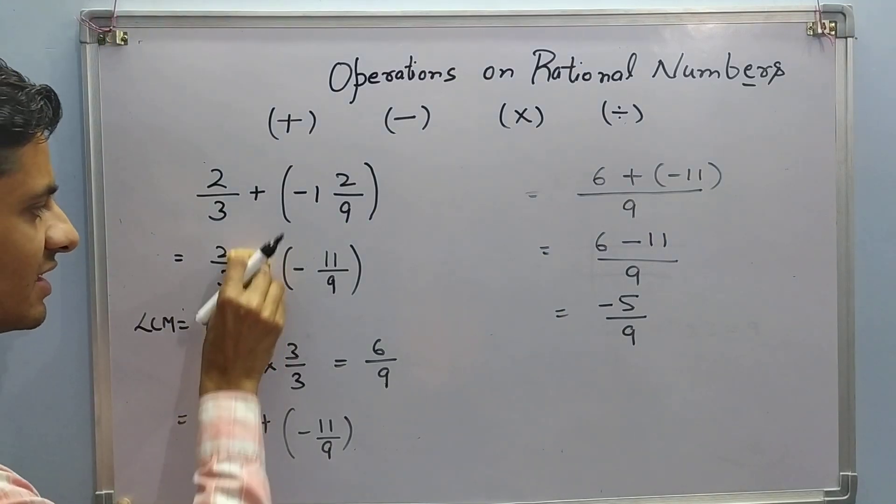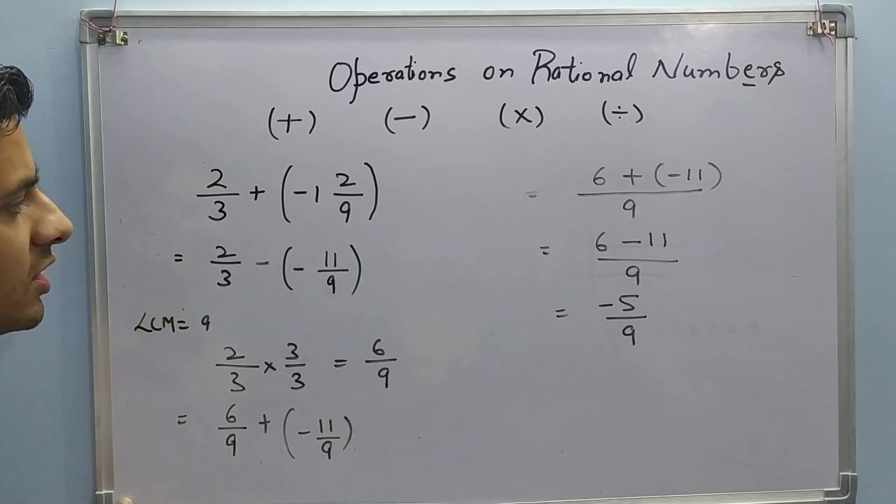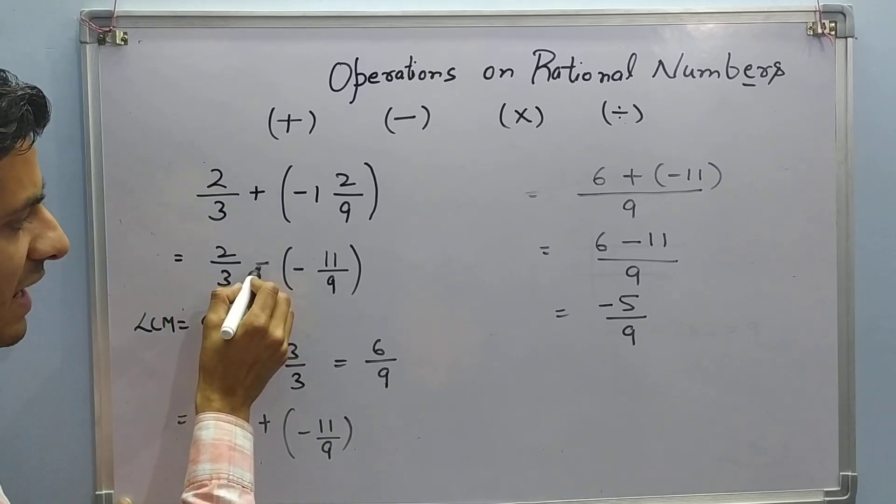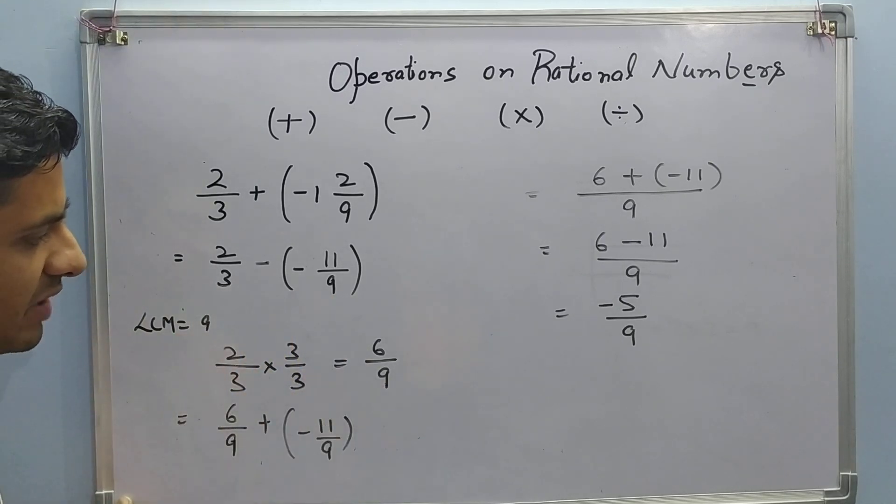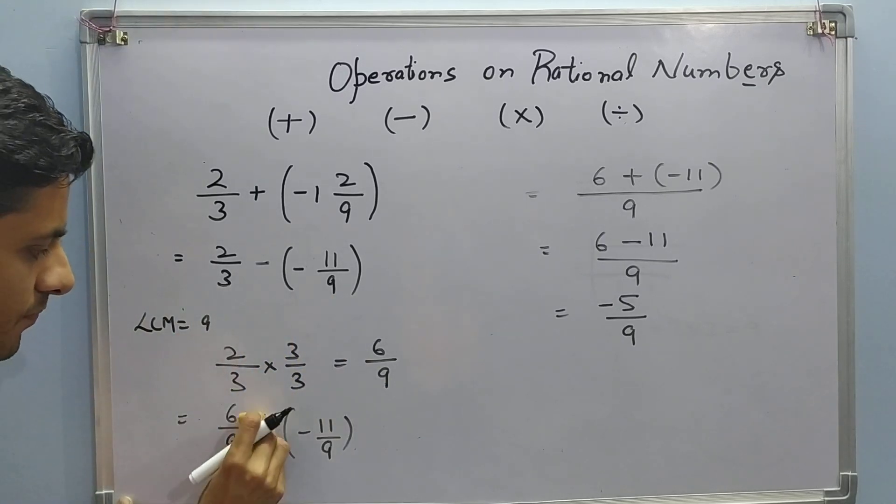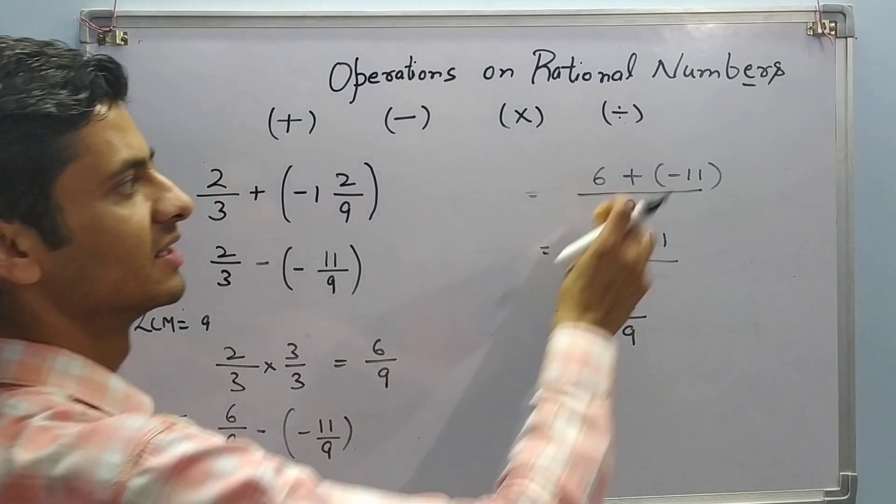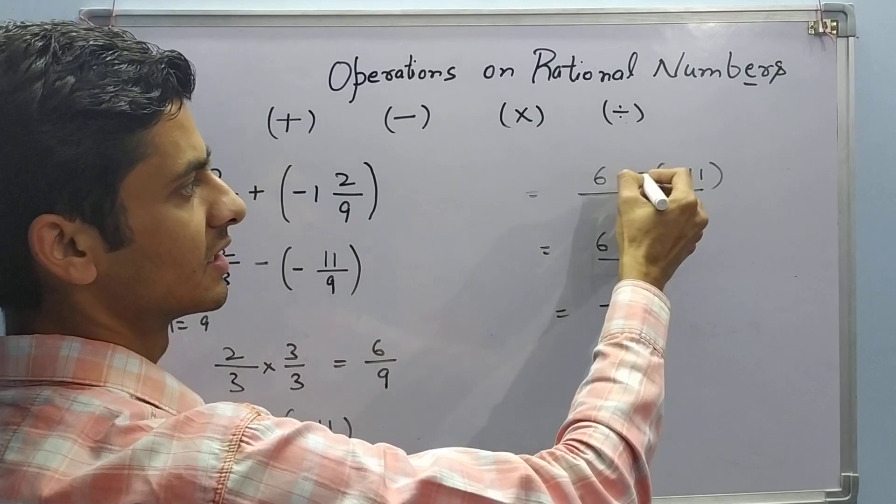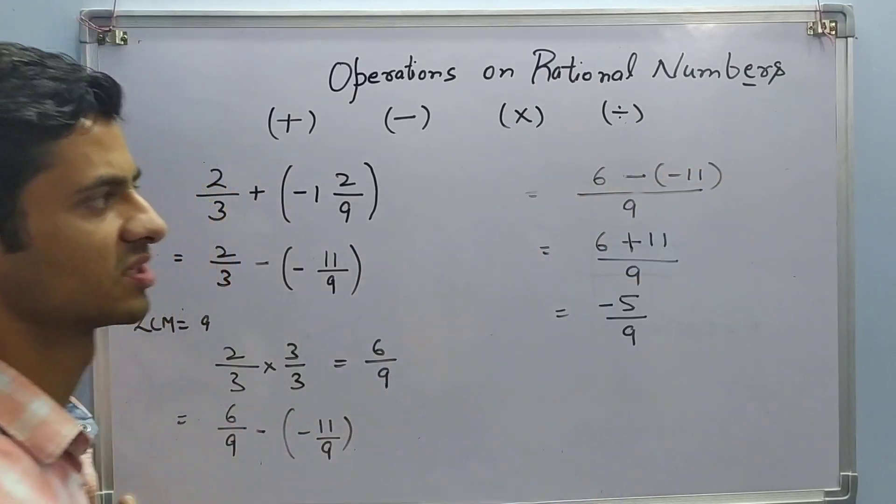Now let us make this also negative. Suppose we want to subtract 2 upon 3 minus negative 11 upon 9. So similarly we will make the LCM first. We have made the denominator same. Now it was 6 upon 9 minus negative 11 upon 9. This will become negative negative. Negative negative sign becomes positive.